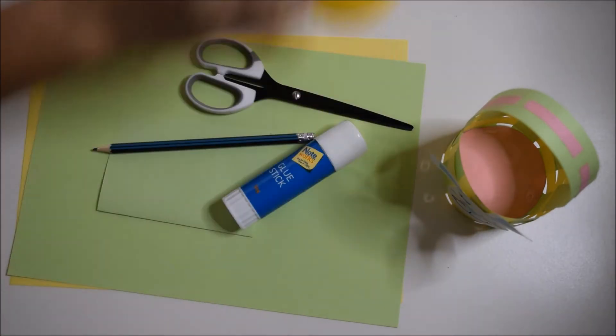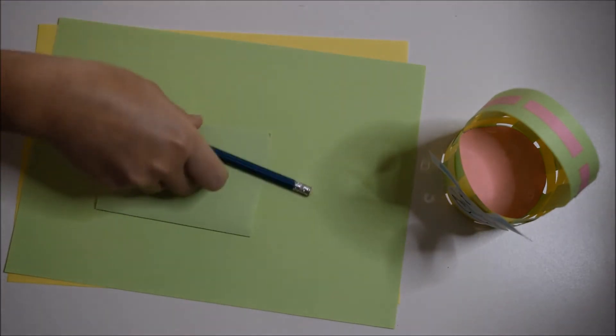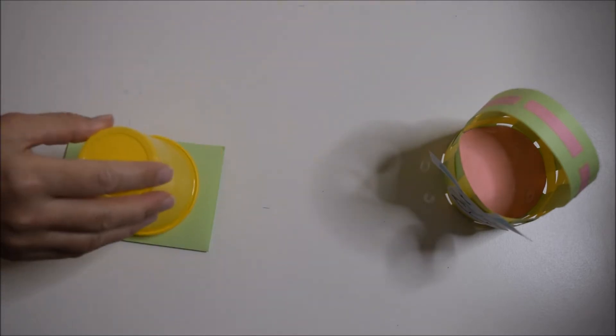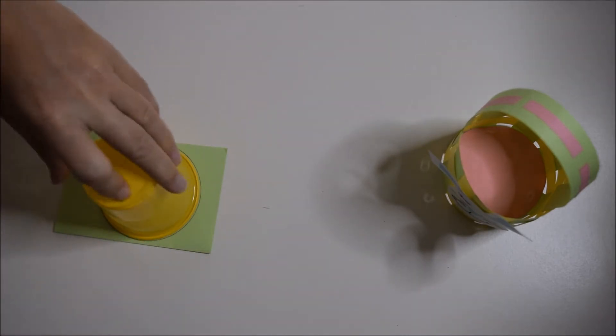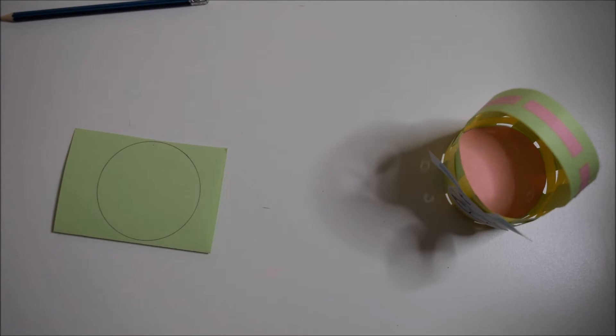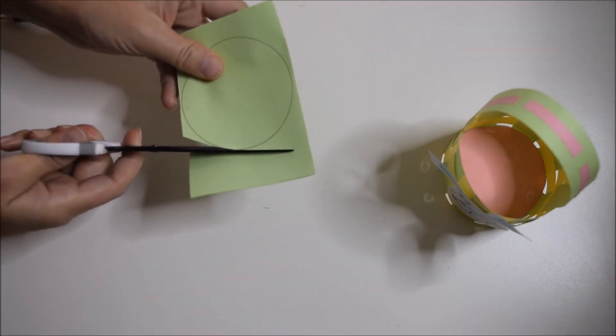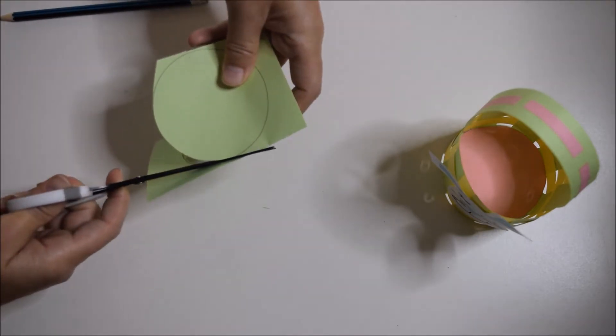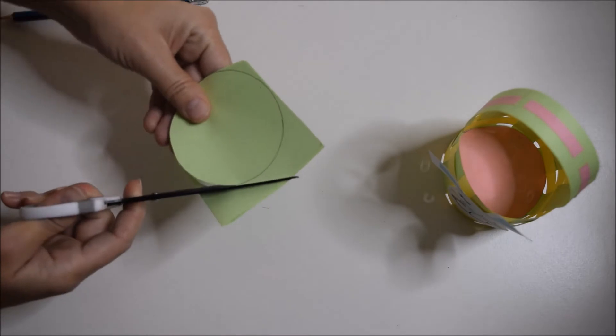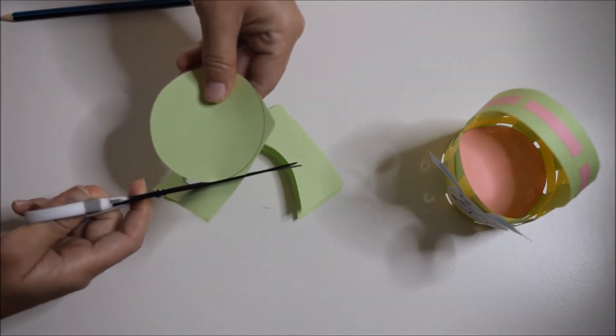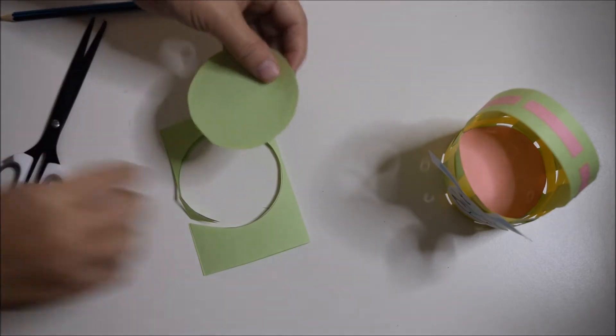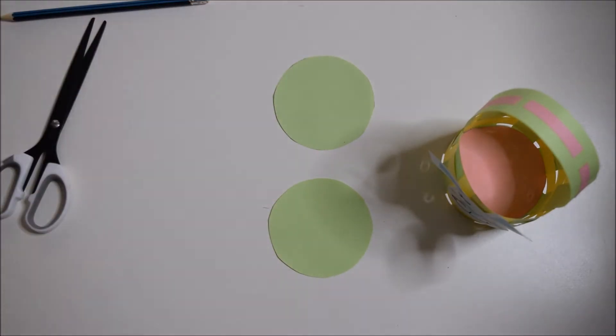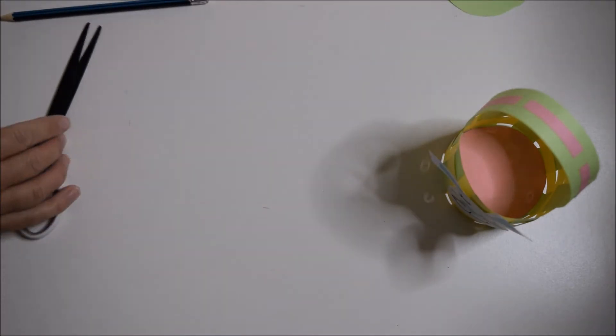Alright, let's get started. So the first step we're going to do, we're going to draw our base for our basket. And with our scissors just cut those out. And that will give me two circles for the base.